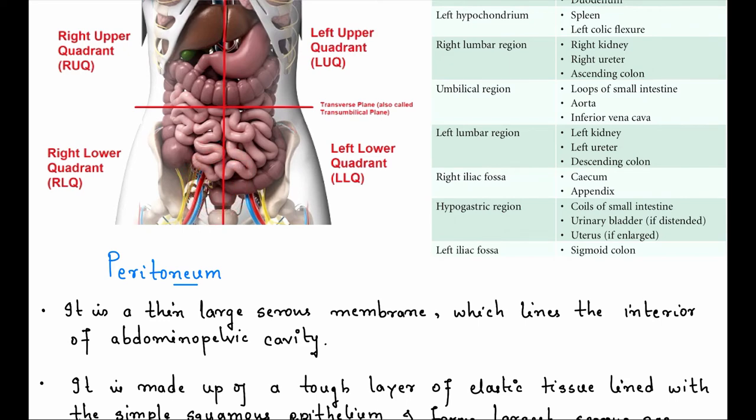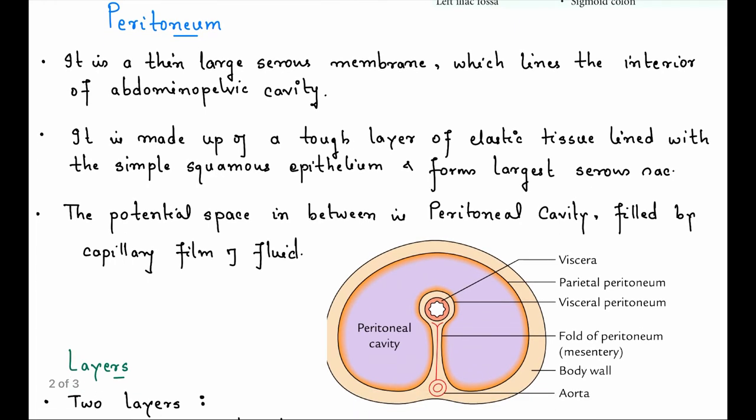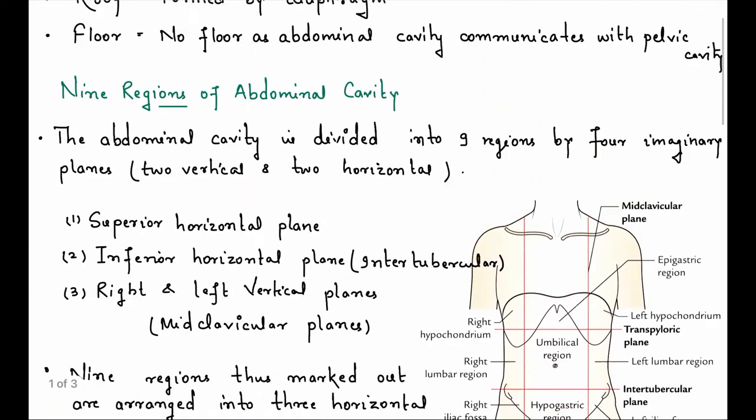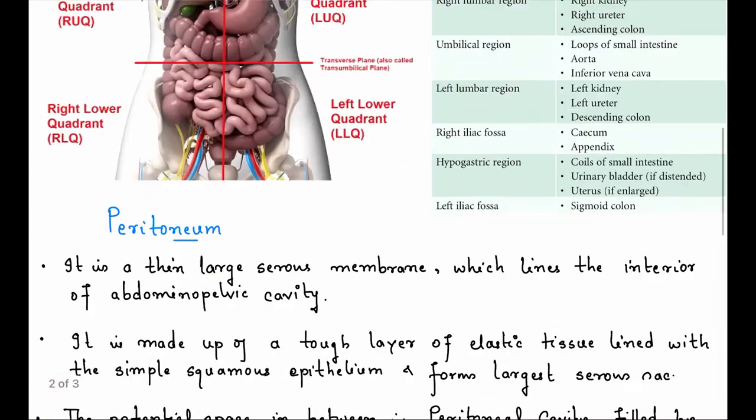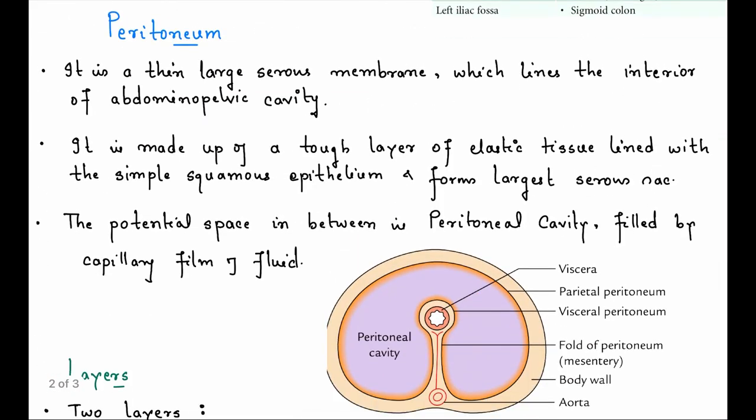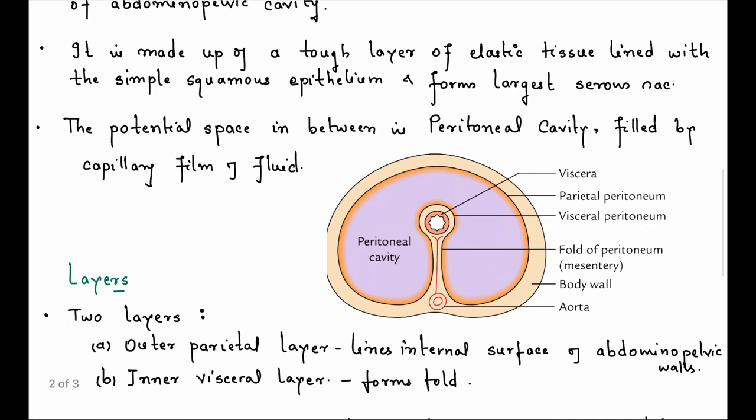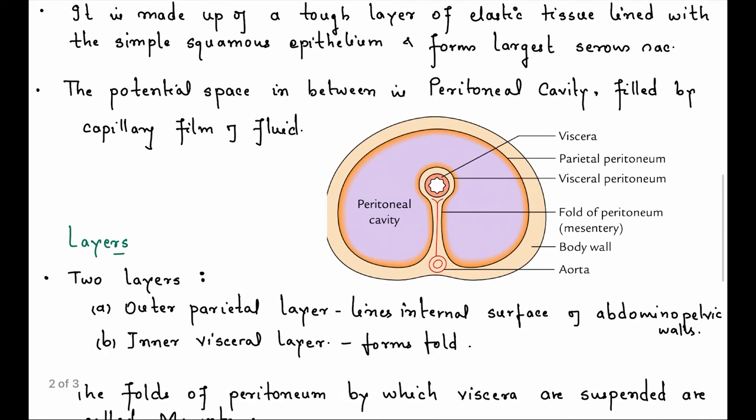Peritoneum - it is a thin, large serous membrane which lines the anterior abdominal pelvic cavity. Both, like just like pleura - two membranes, one visceral, one parietal. Peritoneum between both, space which will protect the inner organs.